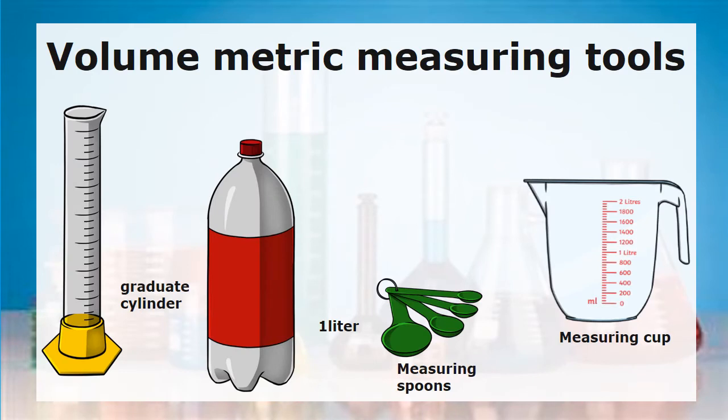Here we will see the measuring tools used in the metric system. We have the graduated cylinder, we have the one liter bottle, measuring spoon, and the measuring cup that is using the metric units.